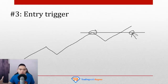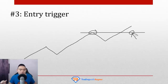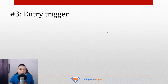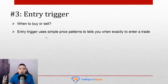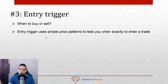This brings us to the third section: entry trigger. Once you have your market structure and your area of value, the next question is when do you enter a trade? Entry trigger tells you exactly when to enter a trade — when exactly to buy or sell. We'll learn some simple price patterns that tell you when to enter a trade after your earlier market conditions are met, namely market structure and area of value. Let's study this more in depth.